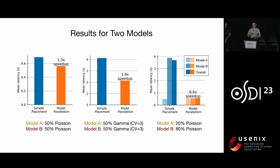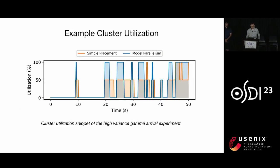The speedup comes from better burst tolerance. When a burst arrives that exceeds the capability of a single GPU, the baseline will begin queuing requests. However, model parallelism can use two GPUs to smooth the requests so the queue can be much shorter. We also show an example cluster utilization curve: for each request burst, model parallel placement can use the whole cluster and use only half of the time to process, while the baseline can only use half of the cluster.